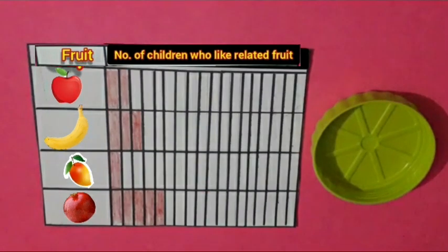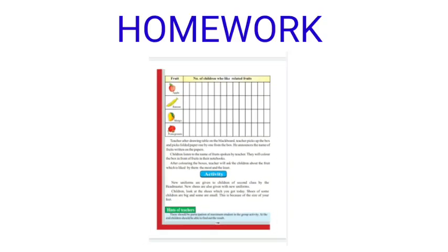Now tell me children, which fruit is liked the most? Pomegranate fruit is liked the most. And which fruit is liked the least? Mango fruit is liked the least. Dear children, today we learned which fruit is liked the most and which fruit is liked the least by our class students. Now you have to find out the favorite fruits of your family members, note it down, and then find which fruit is liked the most and which is liked the least at your home.